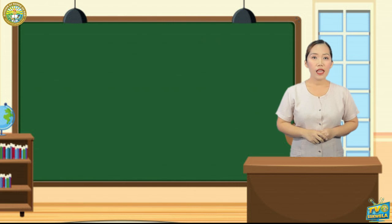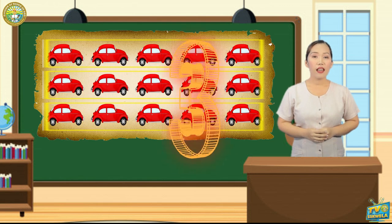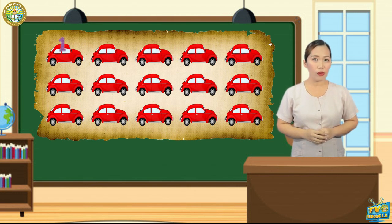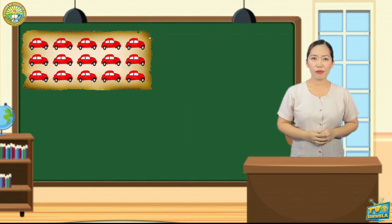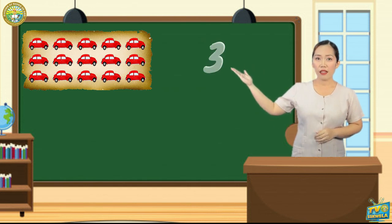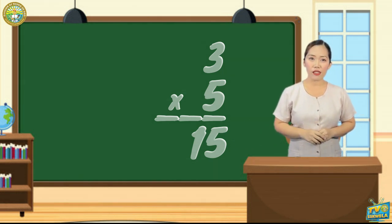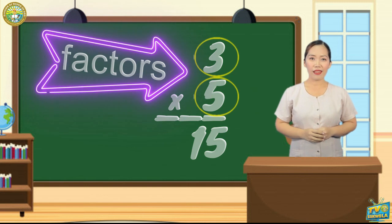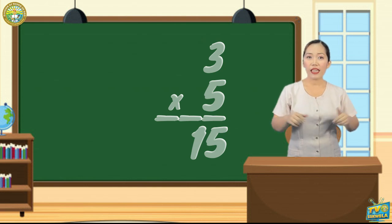Now, take a look at this picture. How many rows do you see? There are three. How many toy cars in each row? Five! Therefore, three times five equals fifteen. What are the factors? Three and five. What is the product? It is 15.